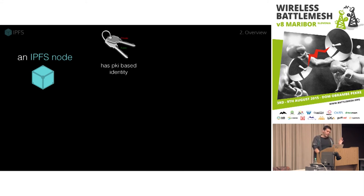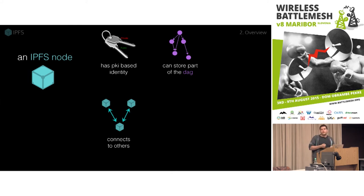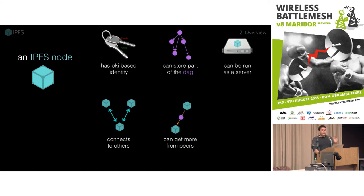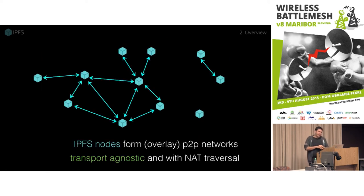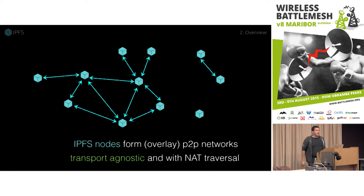The IPFS node has a PKI-based identity — every node has its own public/private key pair. It connects with other nodes and is meant to work over encrypted transport — it doesn't assume you have an encrypted transport, it just sets up one itself. Each node stores parts of the DAG and gets the DAG from other peers. The cool thing about IPFS nodes is that they're meant to be totally ubiquitous and heterogeneous — you can have them be a large server with one IPFS node, or embedded in applications where many applications in your machine each have their own IPFS node and coordinate how they talk to each other. You can think of IPFS networks as huge overlay peer-to-peer networks where any node may be able to dial every other node.